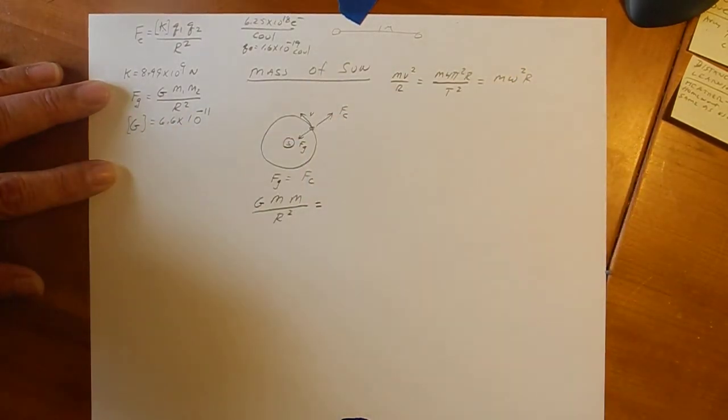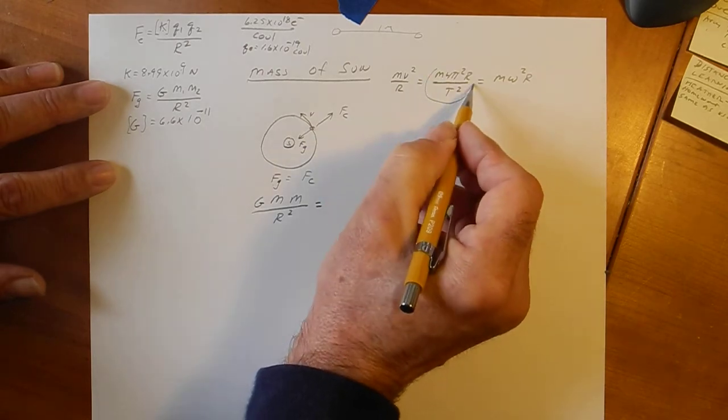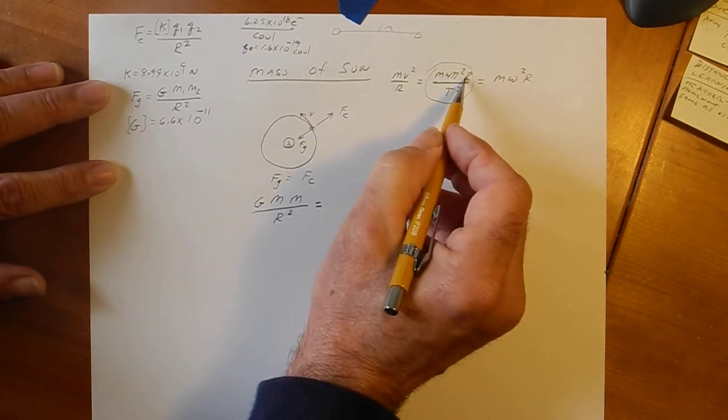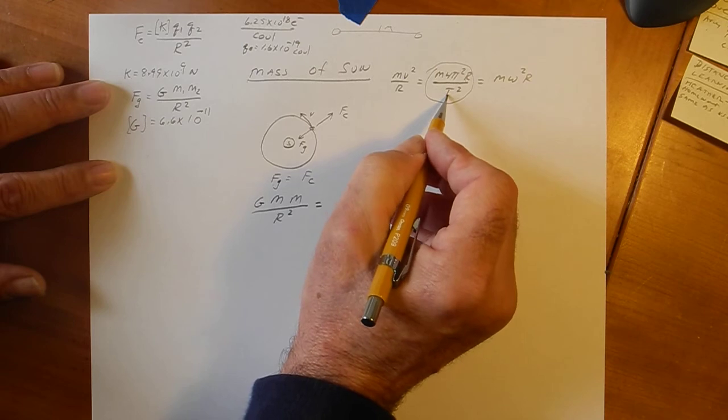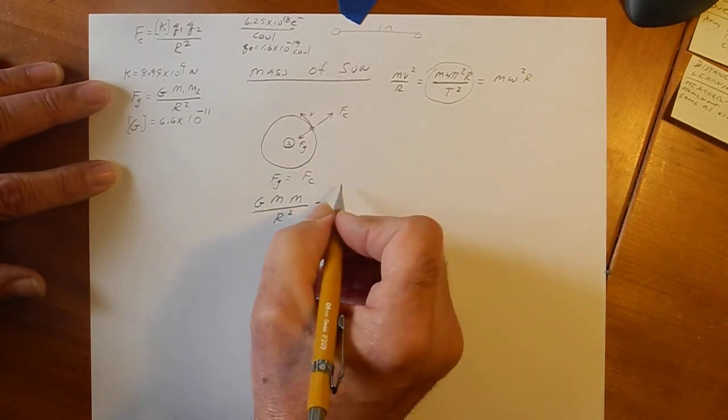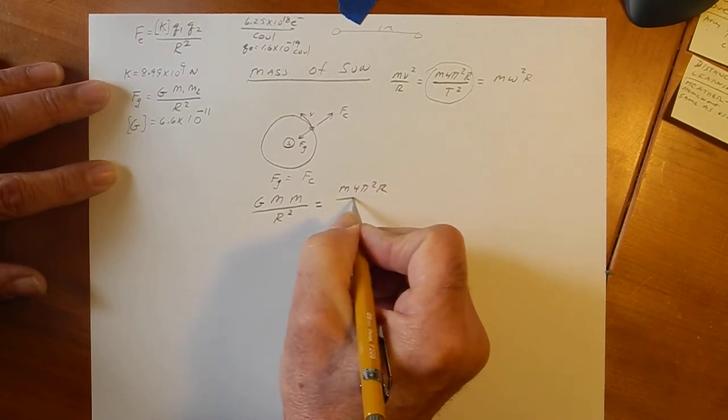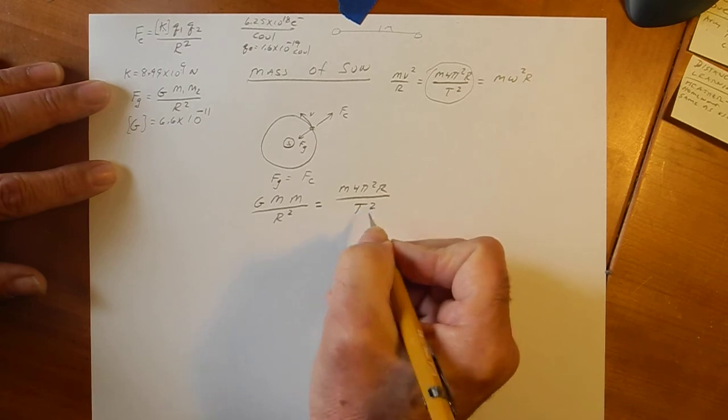The easiest one to use for stuff like this is this guy. Because we know the distance between the Earth and the sun. And we know it makes one lap every 365 days, one year. So, set that equal to M4 pi squared R over T squared.